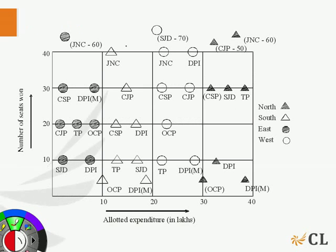Looking at the graph, we see that JNC has won the maximum number of seats among all the parties and there is at least one party in each region that has been allotted an expenditure more than JNC. So, the value of S will be highest for JNC.